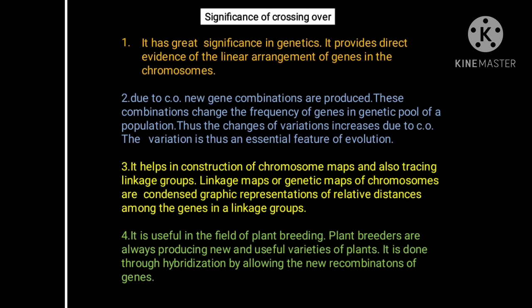The third significance is that it helps in the construction of chromosome maps and tracing linkage groups. Linkage maps or genetic maps of chromosomes are a condensed graphic representation of relative distances among genes in linkage groups. Fourth, it is useful in the field of plant breeding, where plant breeders produce new and useful varieties of plants through hybridization by allowing new recombination of genes.